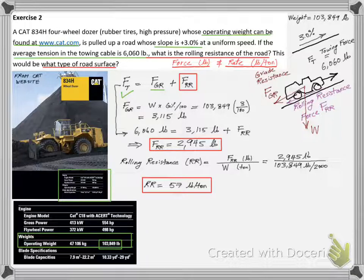Lastly, we need to describe the road surface type, which we can do with the RR value we just calculated.